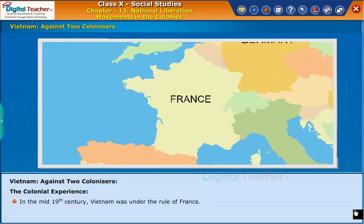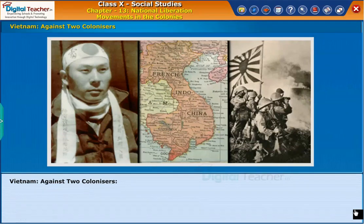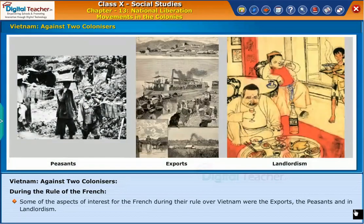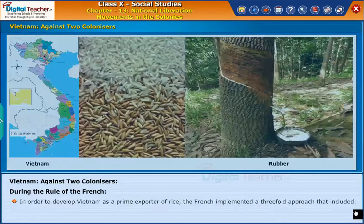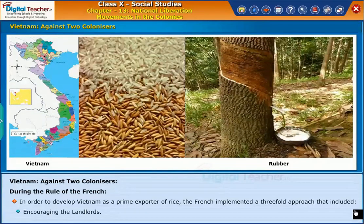The Vietnamese emperor was just a puppet in the hands of the French, as they virtually ruled Vietnam the way Britain ruled India. During the rule of the French, some of the aspects of interest were exports, peasants, and landlordism. In order to develop Vietnam as a prime exporter of rice, the French implemented a three-fold approach: improving the irrigation network, encouraging the landlords, and increasing the market for agricultural products like rice and rubber.